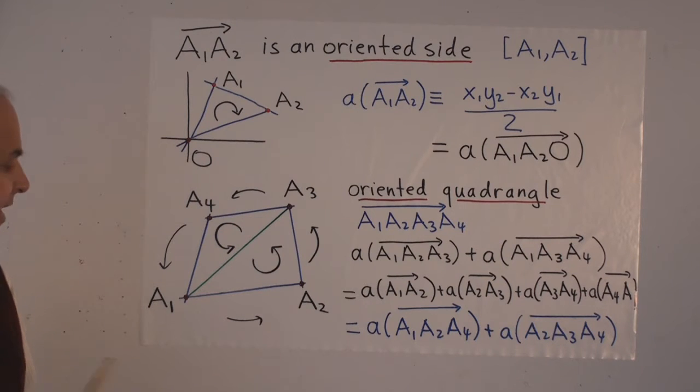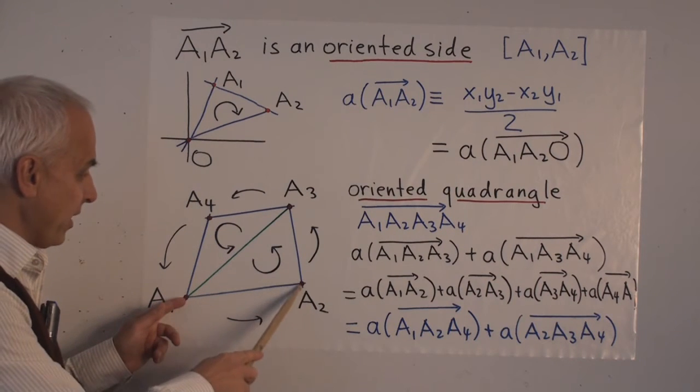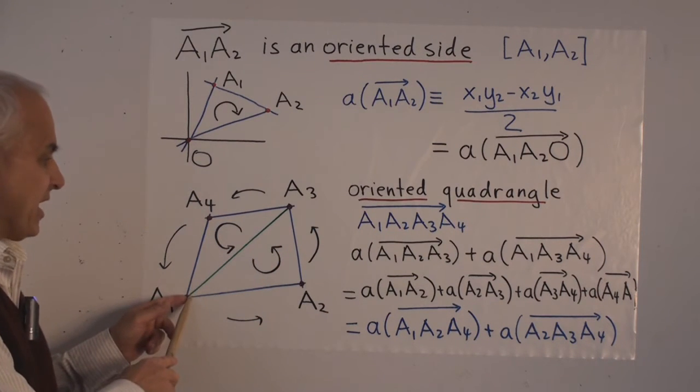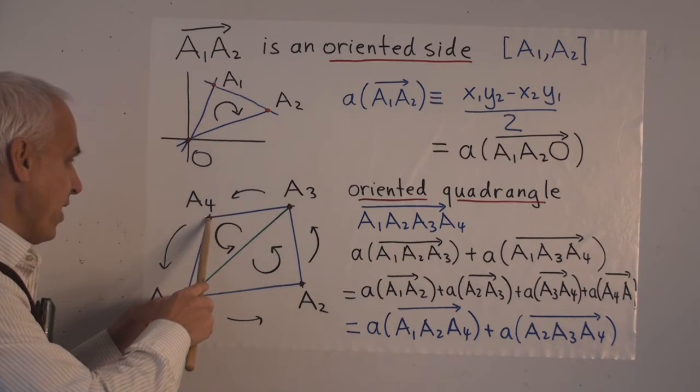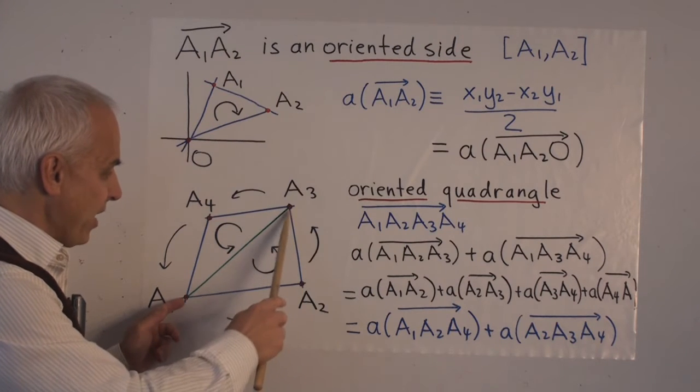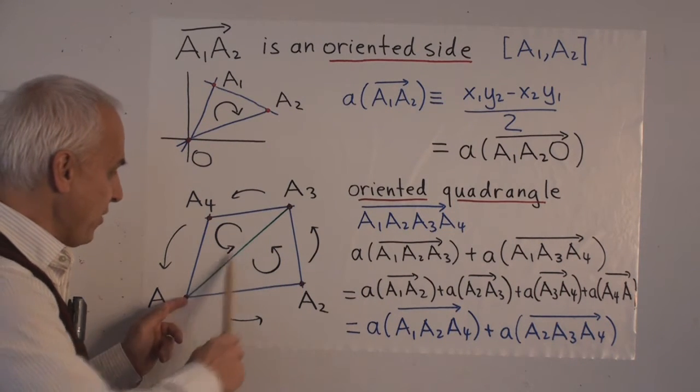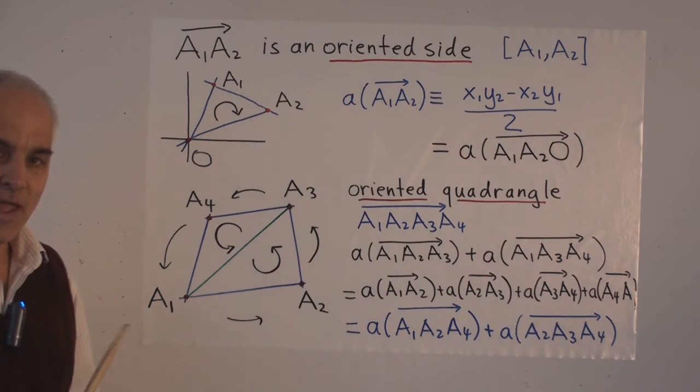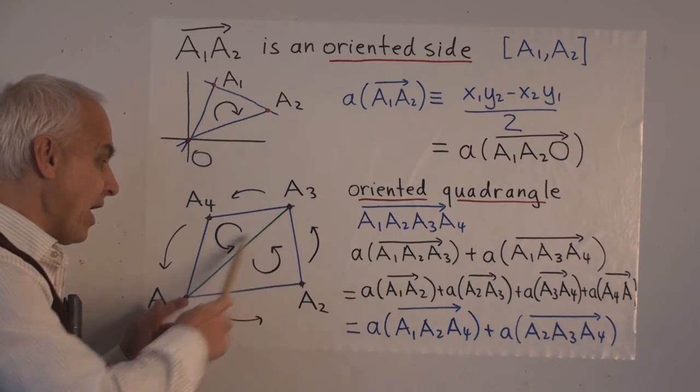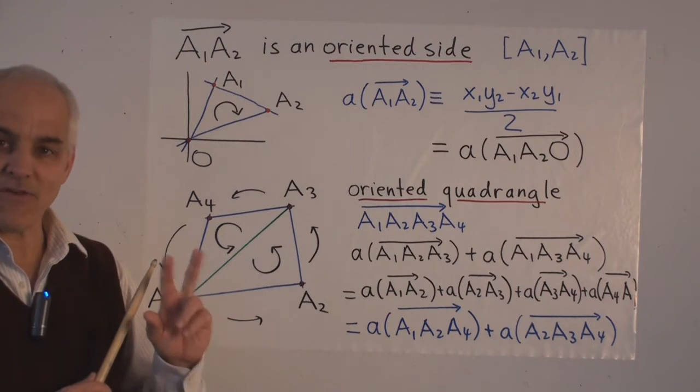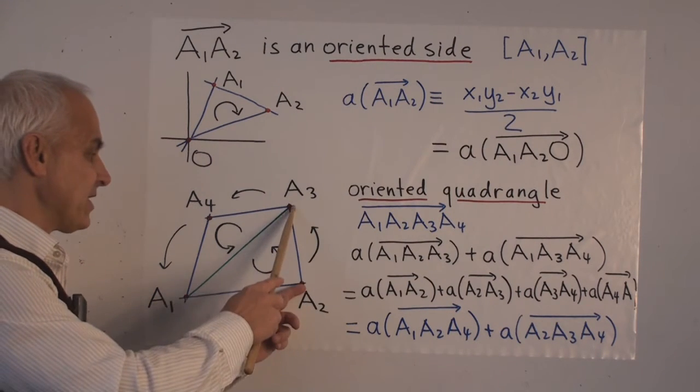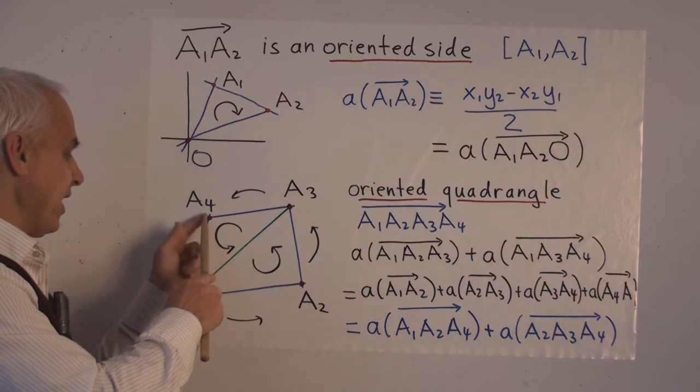And then if we look at the signed area of this oriented triangle, A1, A2, A3, and add to it the signed area of the oriented triangle, A1, A3, A4, then we have three oriented sides for the first triangle and another three oriented sides for the second triangle. And when we add up the signed areas of all those six things, the two middle guys cancel because they have opposite directions. And then we end up just with the signed area of this side, the area of this side, the area of this side, and the area of this side.